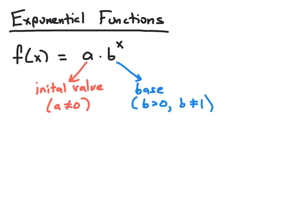An exponential function is a function that can be written in the form f of x equals a times b to the x power. The number a must be non-zero and is called the initial value. The number b must be positive and not equal to 1, and is called the base, since it serves as the base with x as the exponent. The variable being in the exponent is the key characteristic of an exponential function.